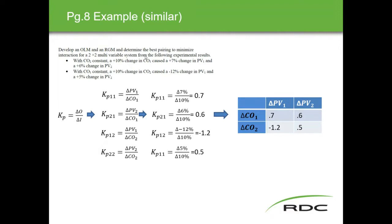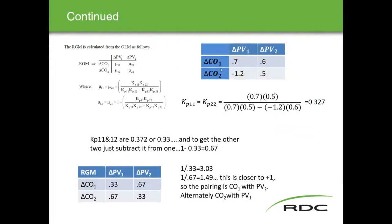Controller two is held constant. We do a 10% change in CO1, which caused a 7% change in PV1 and a 6% change in PV2. The 10% change is common to both tests. For controller one: output change 6 over 10 gives 0.6, and 7 over 10 gives 0.7. PV1 with controller one goes into position 1,1 and position 2,1 gets 0.6. The associated second half of the test generates numbers the same way to fill out the open loop matrix grid.